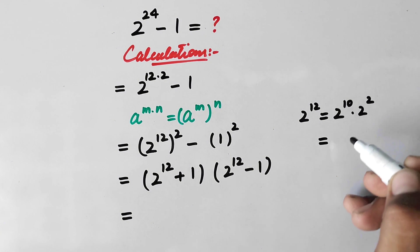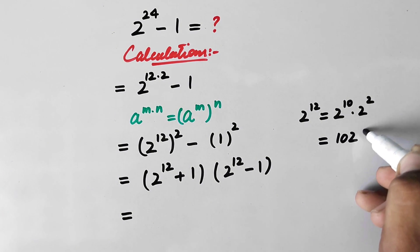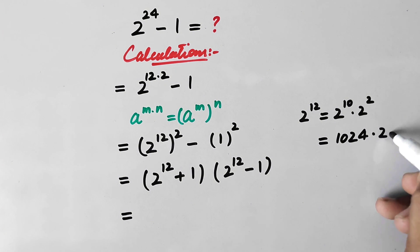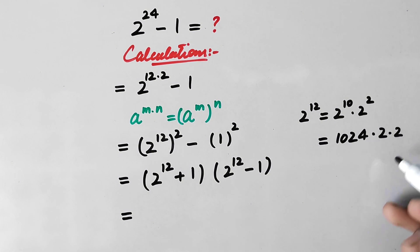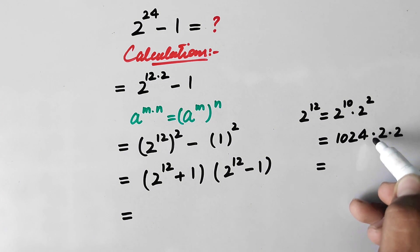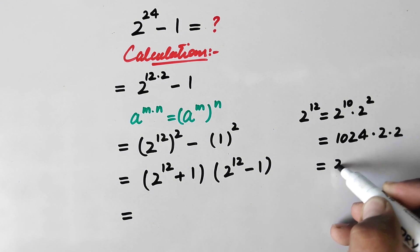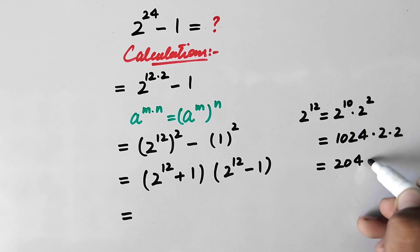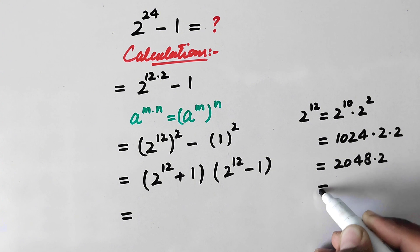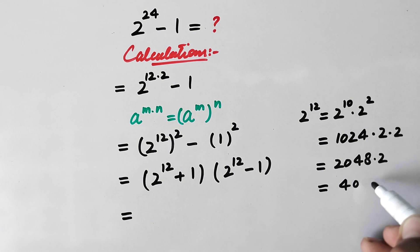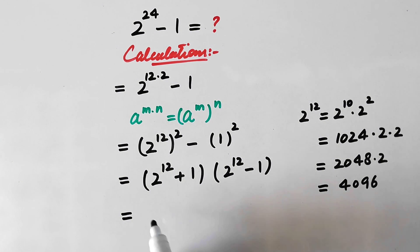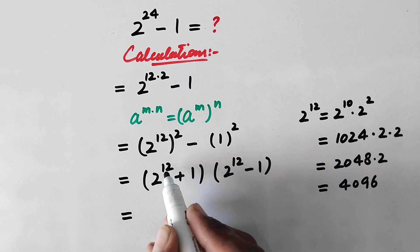This value is well known: 2 to the power 10 is equal to 1024, and 2 to the power 2 is 2 times 2. Multiplying 1024 by 2 gives 2048, and multiplying 2048 by 2 gives 4096. So 2 to the power 12 equals 4096.